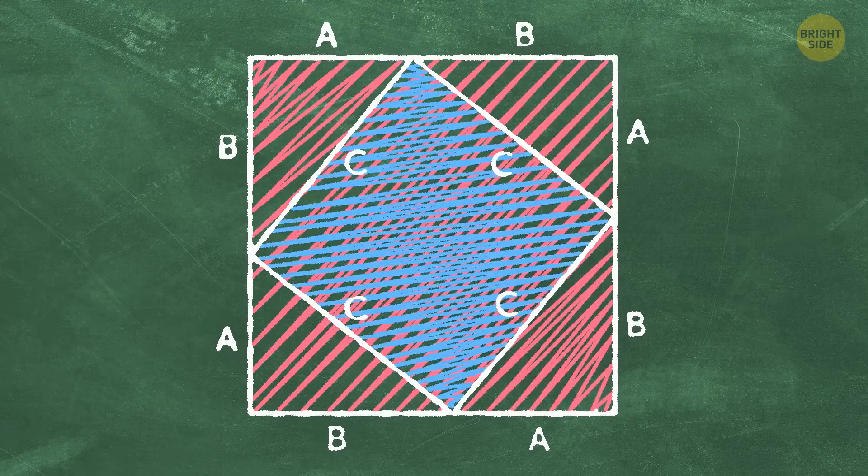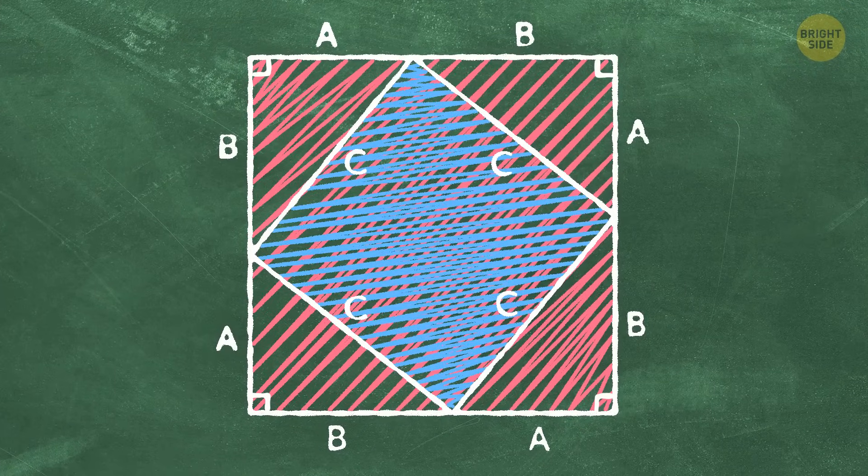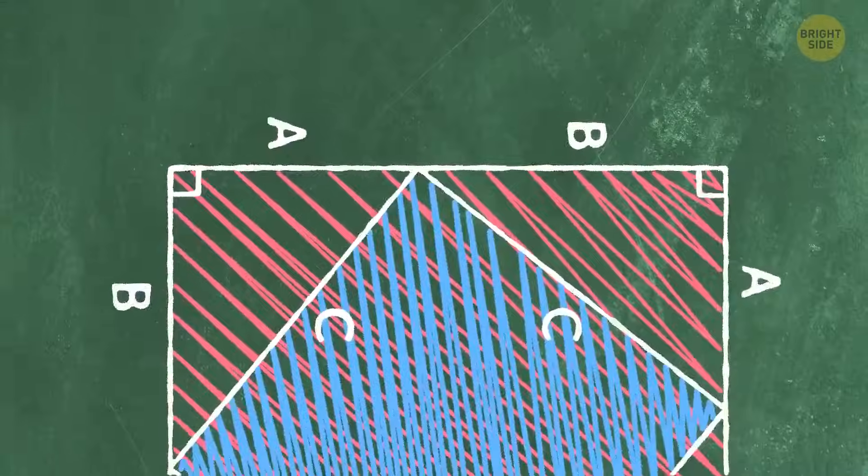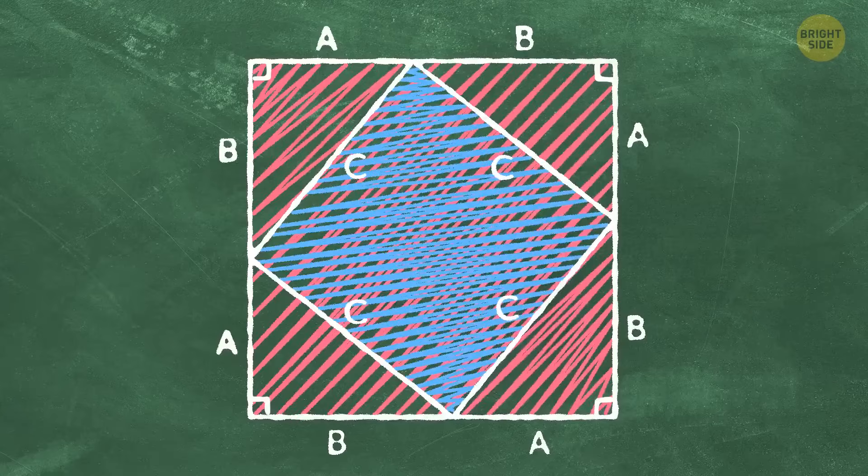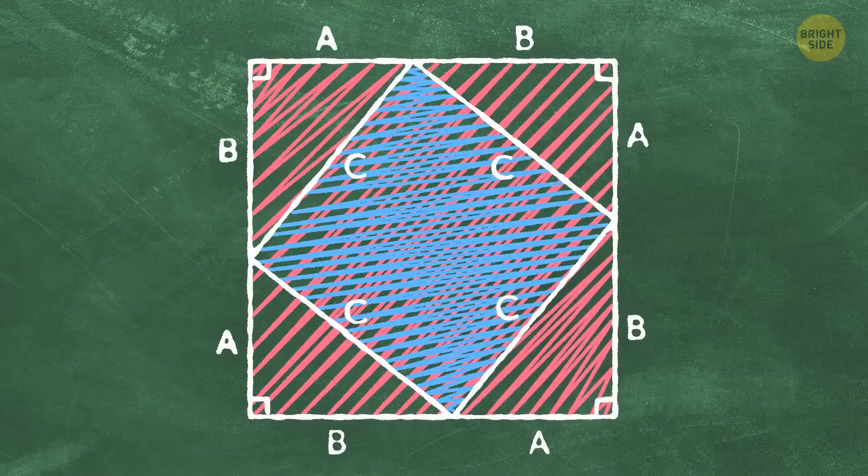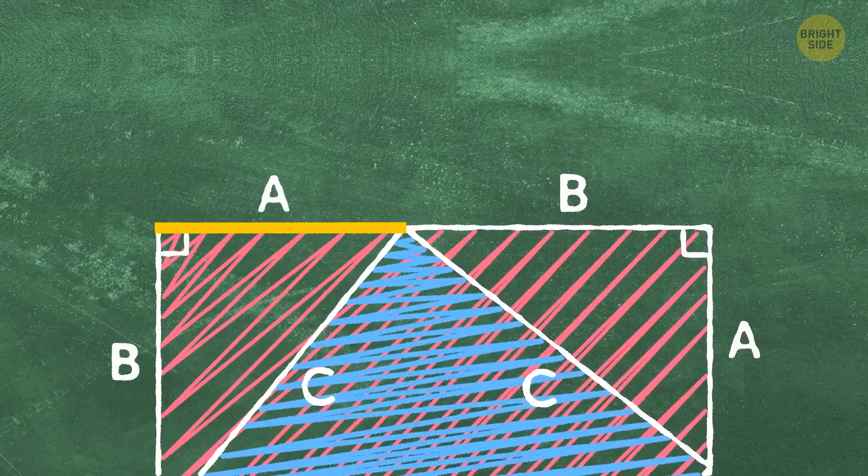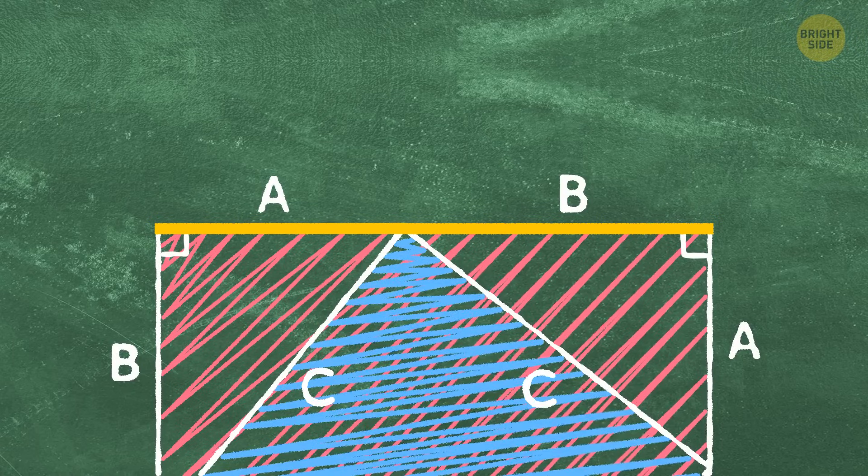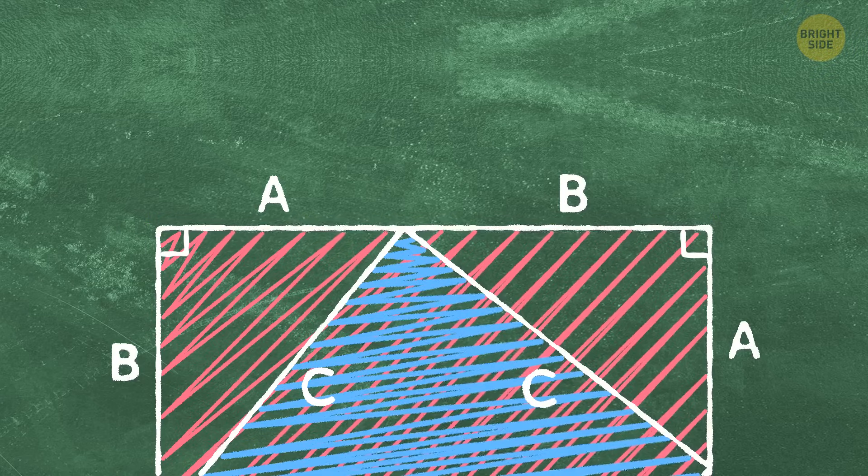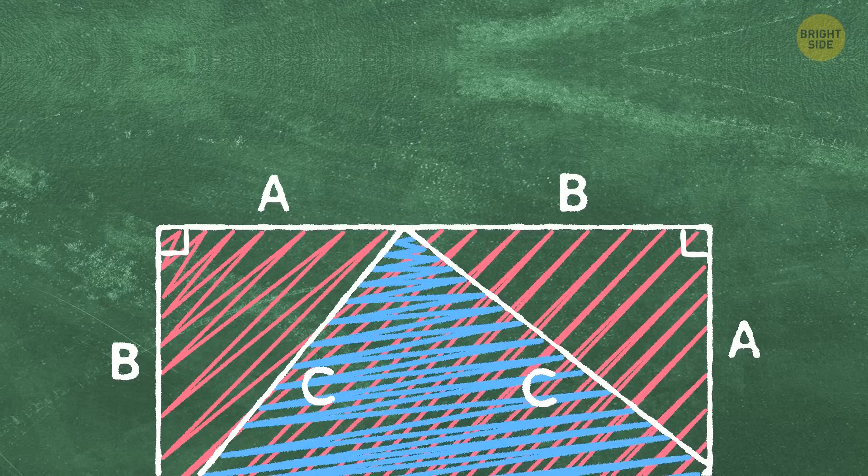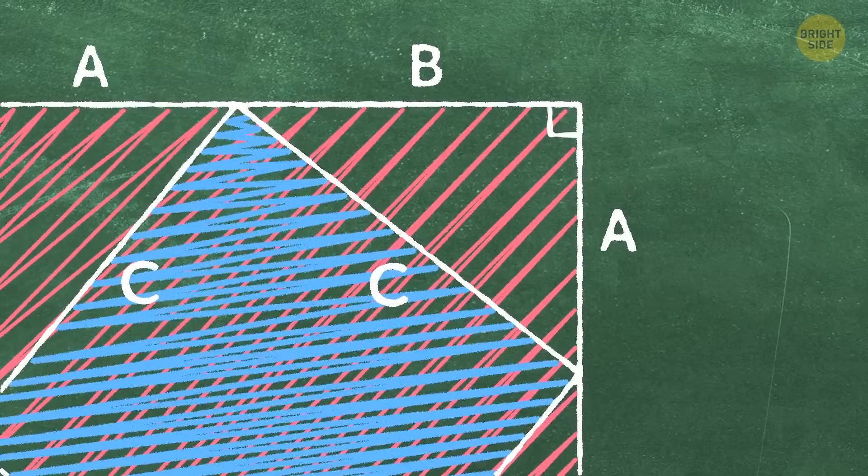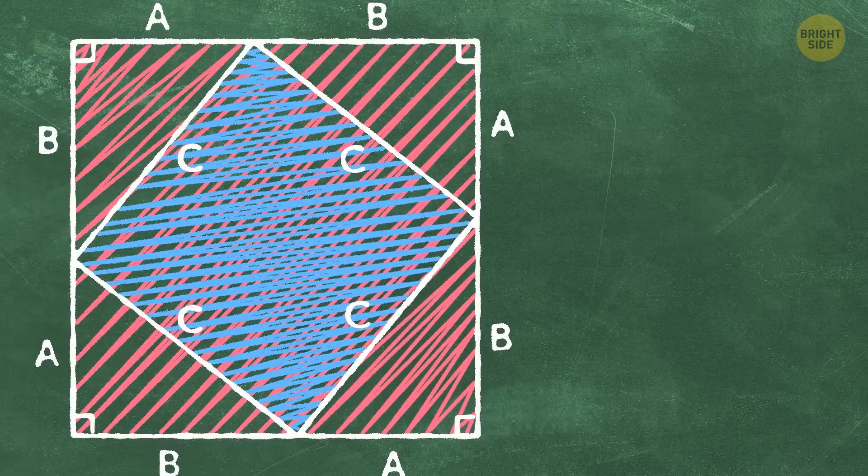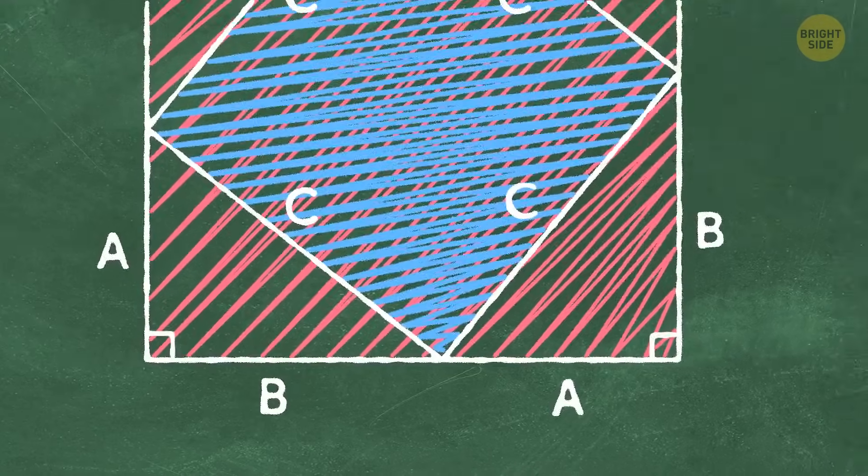But how do we know that? Let's start with the big one. First, it has four right angles, which makes it some kind of a rectangle. To be a square, all four sides must be equal. And, indeed, they are. Look, this is the side a of a triangle. And right next to it, there's another triangle with the side equal to b. So, the side of this big figure is a plus b, right? Now, this is another a, and this is another b. So, this side is a plus b, too.